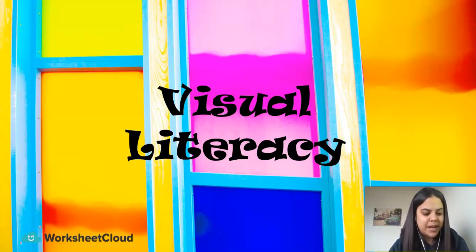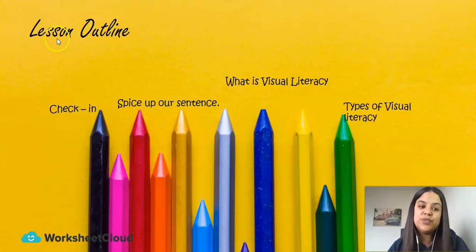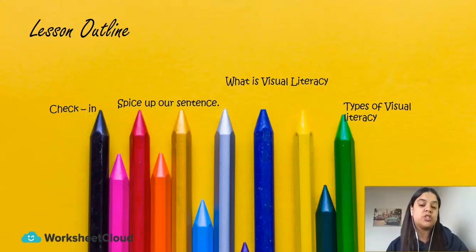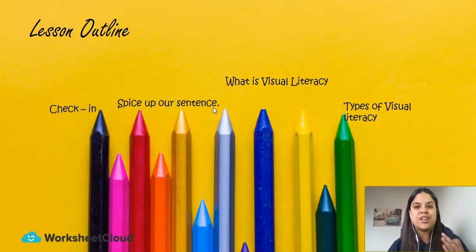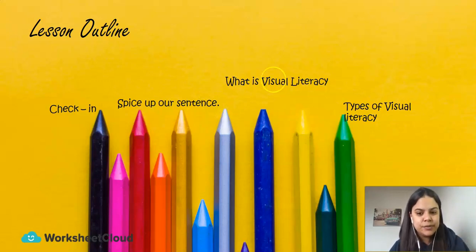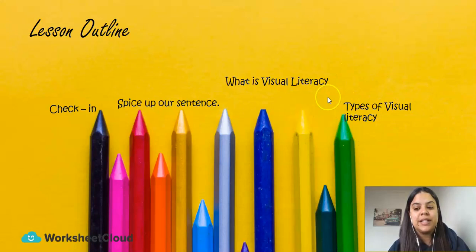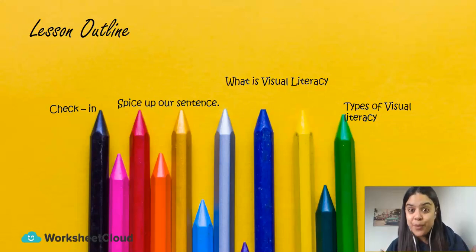Our lesson outline for today: we're going to have a check-in. Then we're going to do 'Spice Up Our Sentence,' where we use adverbs and adjectives to make our sentences more interesting and creative. Then we're going to look at what visual literacy is, and then the types of visual literacy that you can find. That is the lesson outline for today — I hope you are excited.